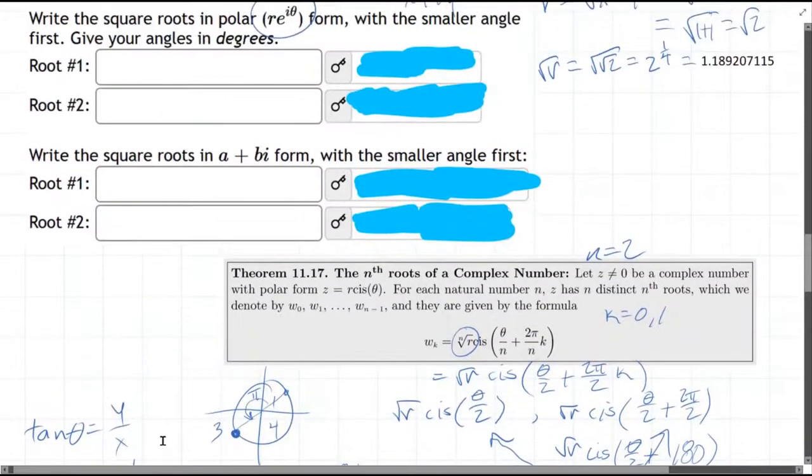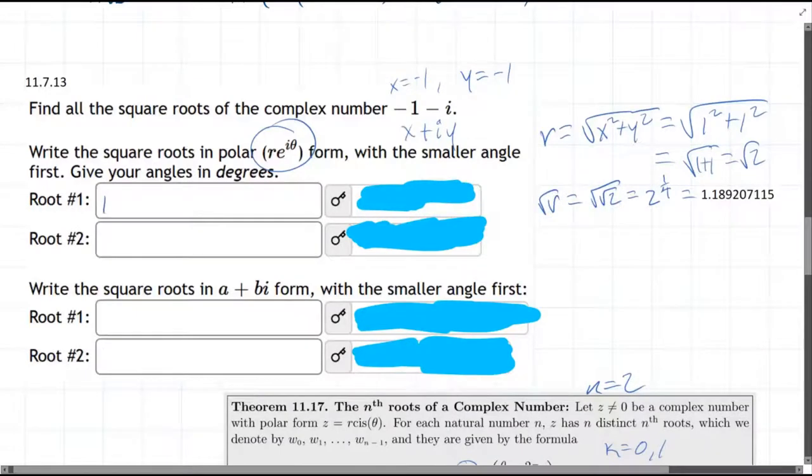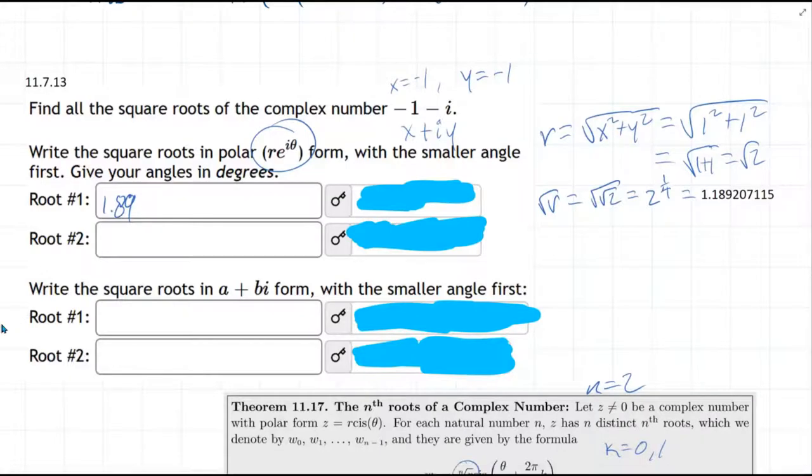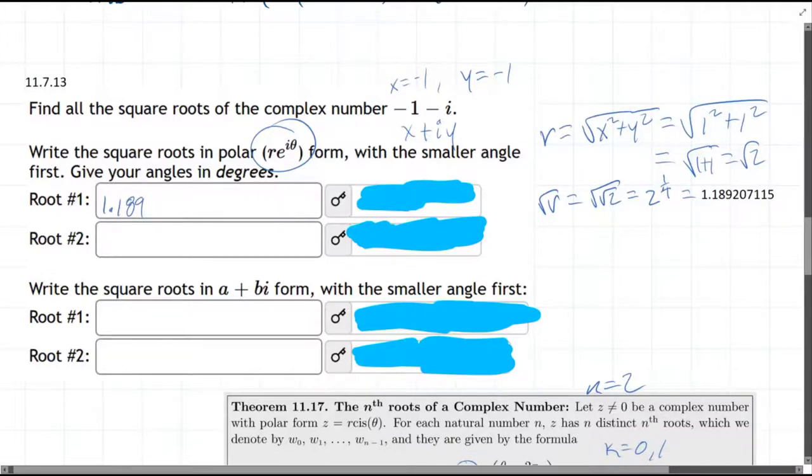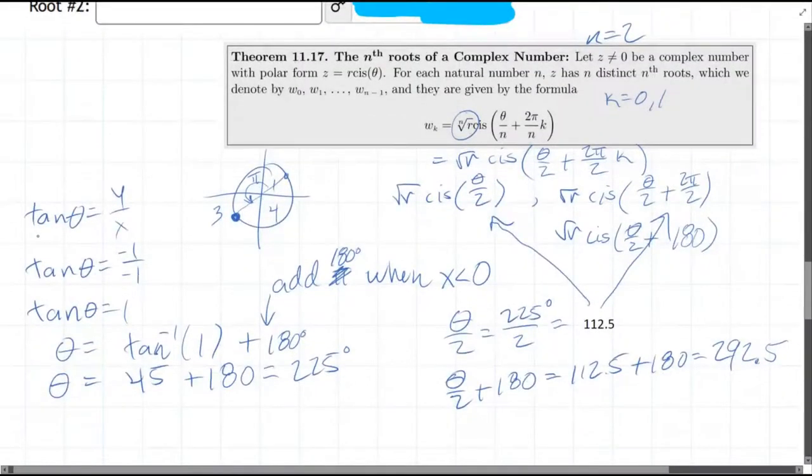So we're ready to write in some of these answers. So the first root, we've already got the radius here. So let's go ahead and write that in. 1.189207 or six decimal places. E to the i. Now what is theta? The first theta we had, we need to use degrees. 112.5.